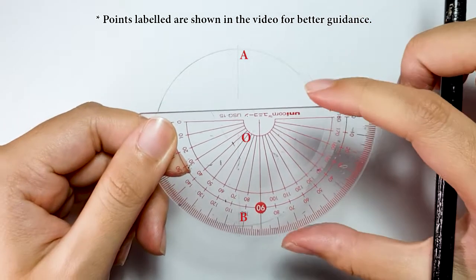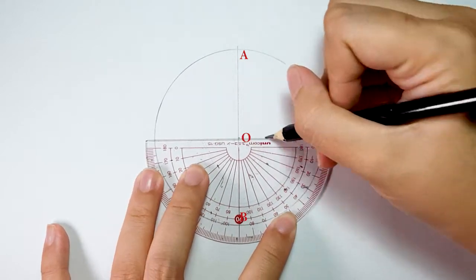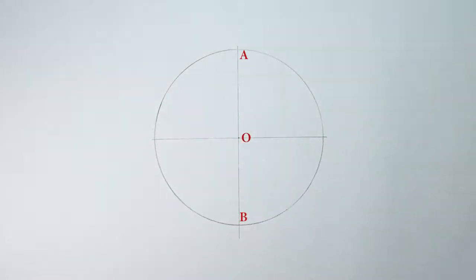Place your protractor at point O and draw a perpendicular line. Make sure both sides of the angles are 90 degrees. These points are called C and D.